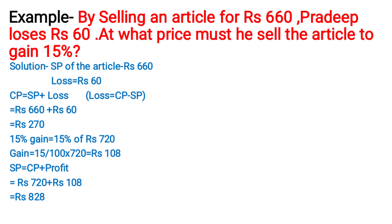Simplifying: cancelling zeros, 5 threes of 15, we get gain equal to Rs. 108. Now selling price is equal to CP plus profit, so SP is equal to Rs. 720 plus Rs. 108, which gives Rs. 828. Hence, he should sell the article at Rs. 828 to gain 15%. In this way we solve questions of profit and loss.